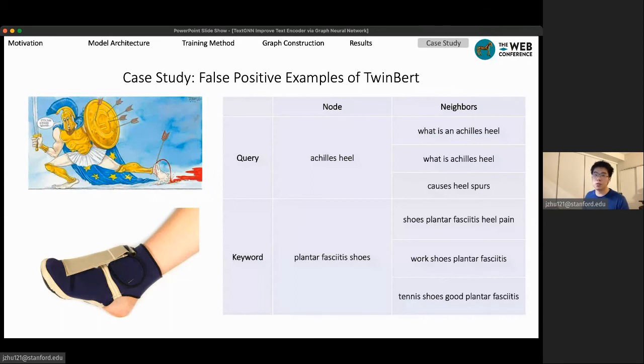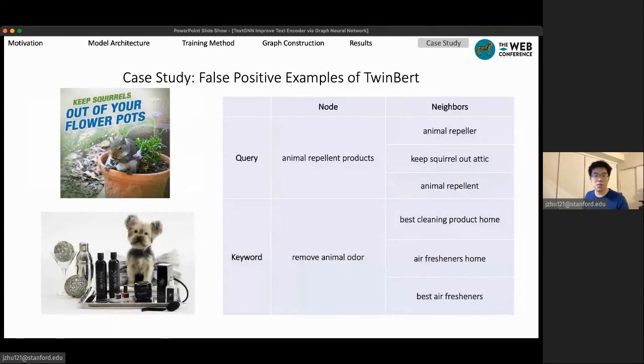So in the first example, we see that the existing TwinBERT model incorrectly associates the Greek mythology Achilles' heel with recovery shoes. From the semantic meaning, heel is very close to shoes, and Achilles' ankle is actually a phrase highly related to the pain of tendon. However, the neighbors strongly indicate that people who search for this query are actually looking for the story from the Greek mythology and not the foot injury.